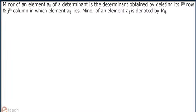Let us study minor and cofactor of a determinant. Minor of an element aij of a determinant is the determinant obtained by deleting its ith row and jth column in which element aij lies. Minor of an element aij is denoted by mij. Let us consider a determinant of order 3.